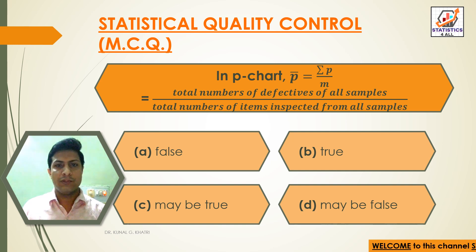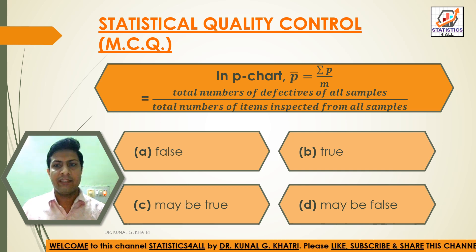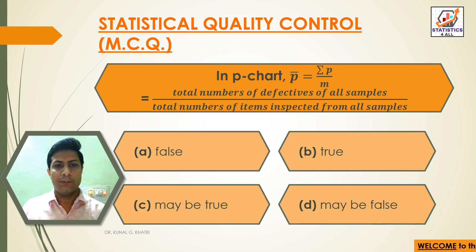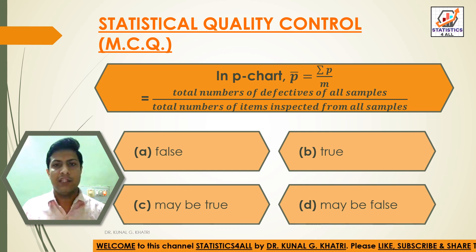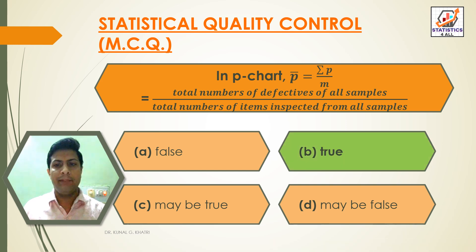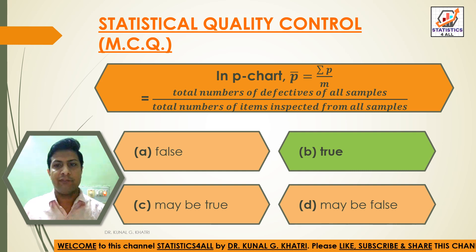Question 15: In P chart, P-bar = ΣP / m = total number of defectives of all samples divided by total number of items inspected from all samples. Option A: False, Option B: True, Option C: Maybe true, Option D: Maybe false. Answer: Option B — True.